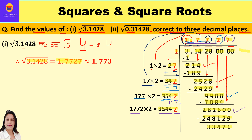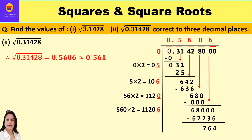They asked for the answer correct to three decimal places, and we calculated to four decimal places. The fourth decimal place is 7, which is greater than 5, so we increase the third decimal place by 1: 2 becomes 3. Therefore, the square root of 3.1428 correct to three decimal places is 1.773.